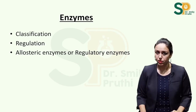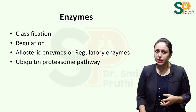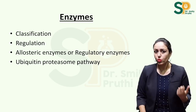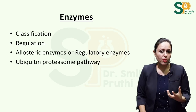For allosteric enzymes, also known as regulatory enzymes, know their sigmoidal graph — questions in recent years are more frequently asked on the allosteric enzyme graph than the Michaelis-Menten graph. Also study the ubiquitin-proteasome pathway for protein degradation, and chaperones for protein folding. Ubiquitin is for protein degradation and chaperone (C-H-A-P-E-R-O-N) is for protein folding — they give shape or folding to proteins.